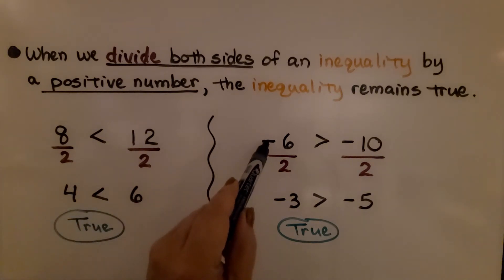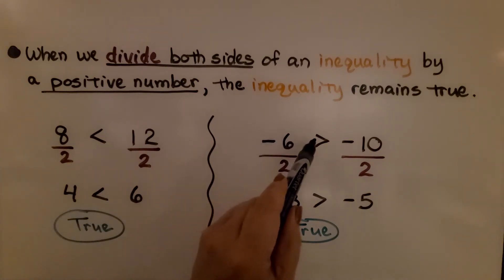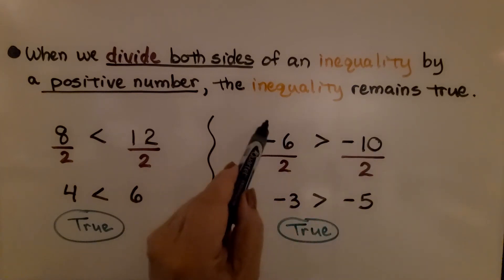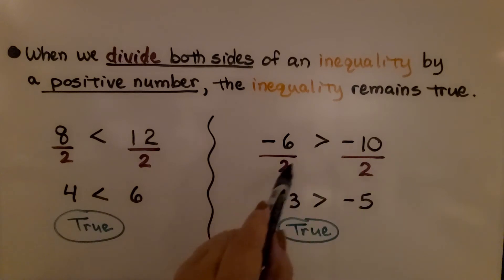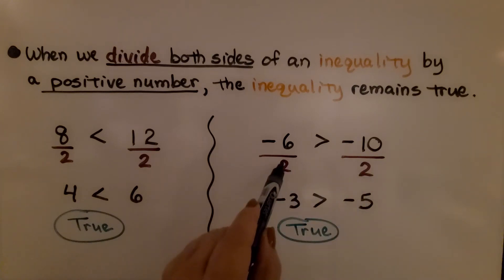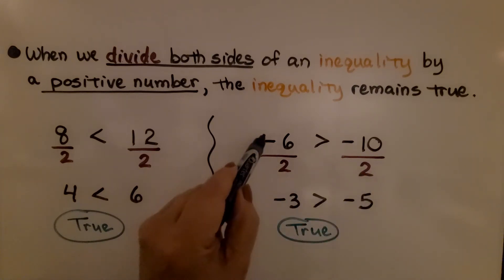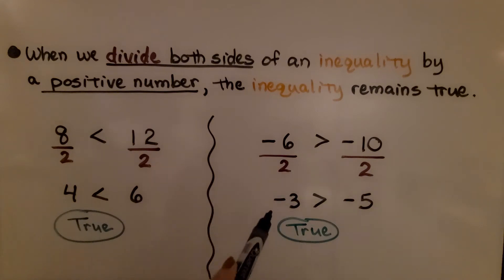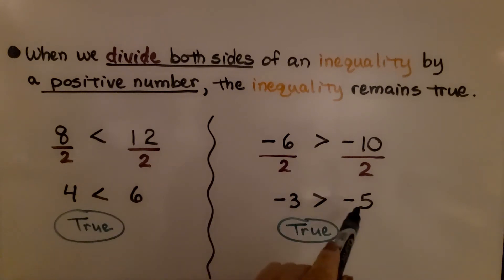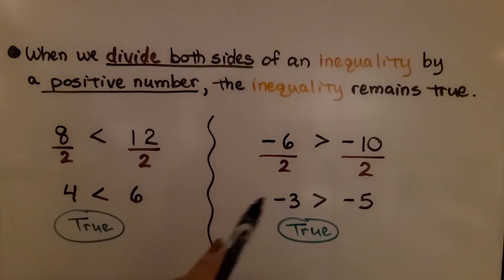And if we have negative 6, which is greater than negative 10 because it's closer to 0, and we divide both sides of this inequality by a positive 2 — even though they're negatives, we're dividing by a positive 2 — we get negative 3 is greater than negative 5, and that's true. Negative 3 is closer to 0, so it's greater.